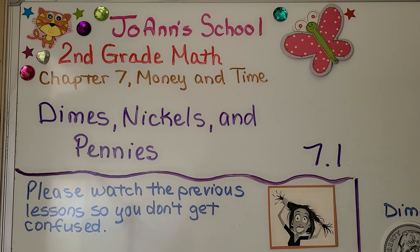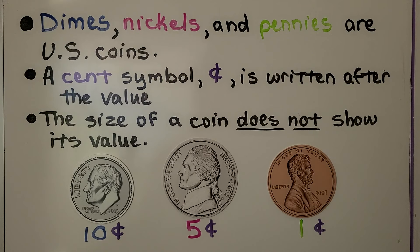Now we're in chapter seven, and it's all about money and time. This is lesson 7.1: dimes, nickels, and pennies.